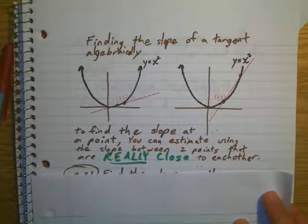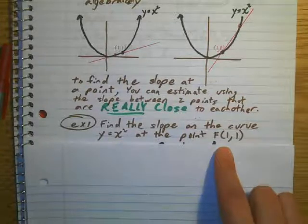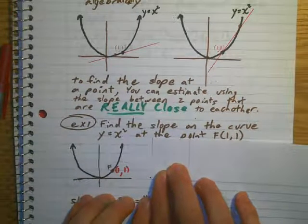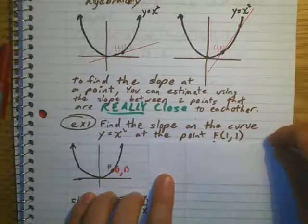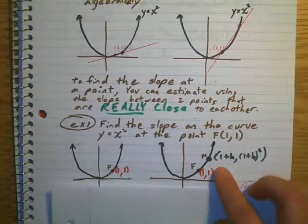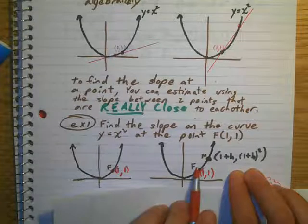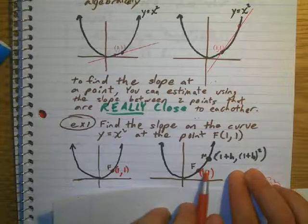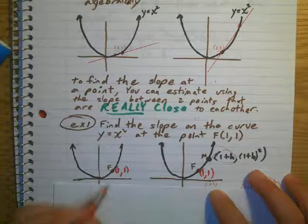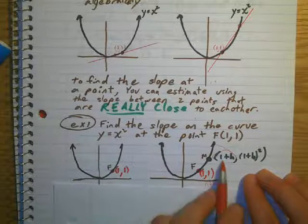Let's see how this works. Find the slope of the curve at y equals x squared at the point 1, 1. Here's 1 comma 1 on the graph y equals x squared. Now I'm going to randomly pick a point — I'm going to call it h units to the right. If it's h units to the right, then the x value is going to be 1 plus h, because I've moved over h to the right. If I've moved over to 1 plus h, then my new y value is going to be (1 plus h) squared. This is 1 plus h, this is (1 plus h) squared.